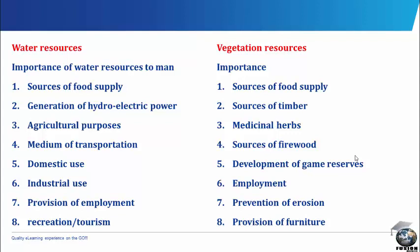Importance of vegetation resources: 1. Sources of food supply — resources like fruits (mango, oranges, apples), leaves in form of vegetables, and bush meats from wild animals provide food for man. 2. Sources of timber — timber like iroko, obeche, mahogany and so on are sources of planks, plywood and so on. 3. Medicinal herbs — leaves, roots and barks of some trees are used to prepare medicinal herbs. 4. Sources of firewood — firewood is used to provide fuel for cooking food, warming the body during cold weather and for drying fish. 5. Development of game reserves — forest and savannah are the home of wildlife which can serve as game reserves, for example Yankari game reserve.